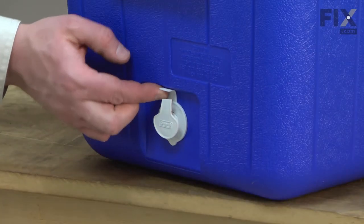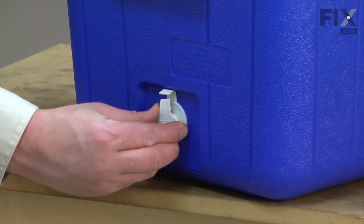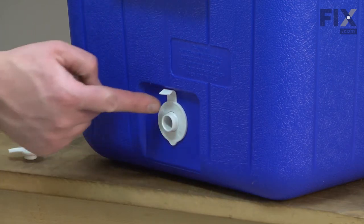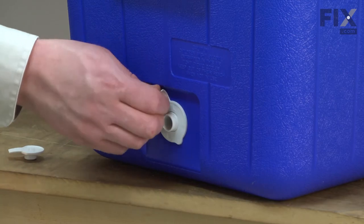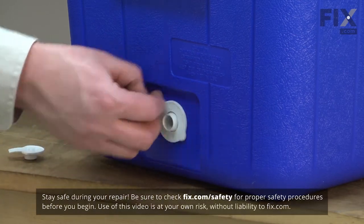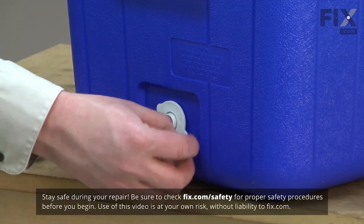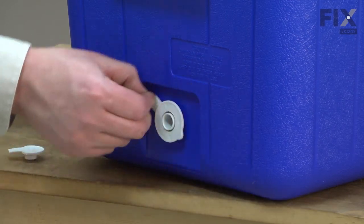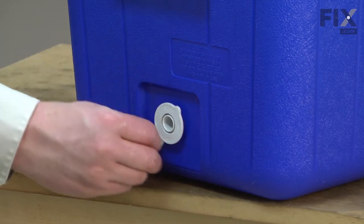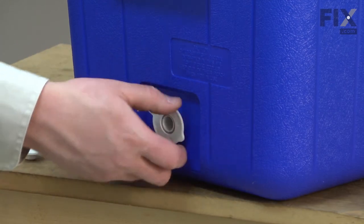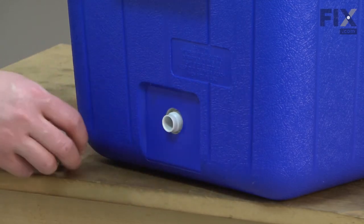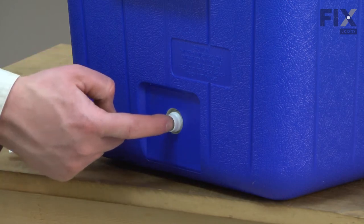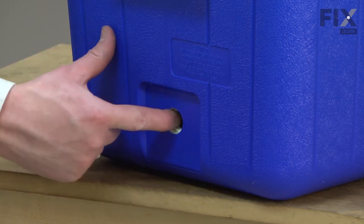Here's my drain cap and the lanyard is broken so I'm just going to pull the old cap out of the way and now remove the nut. This just rotates off. I'll push the spout to the inside of the cooler along with the grommet.